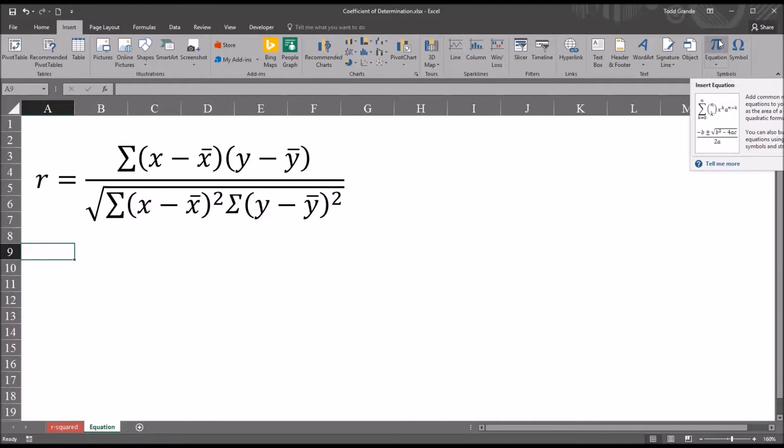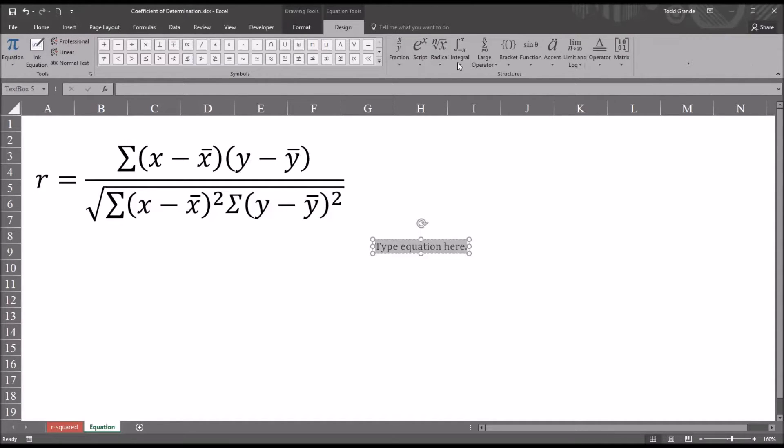So here to the right, you see we have the equation button. And if you use this down arrow, the ink equation is the last option. But I'm going to hit the pi symbol. And it brings up equation tools design. And the ink equation is over here on the left.